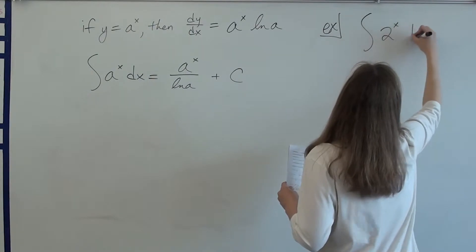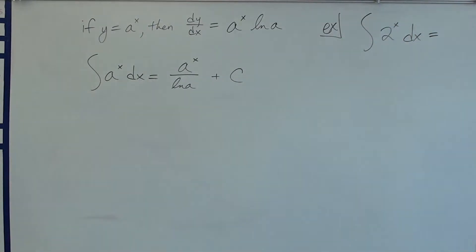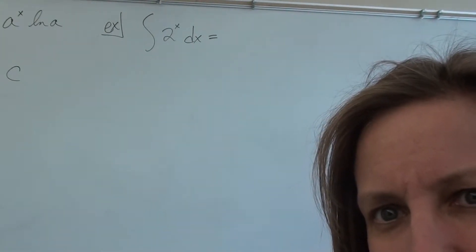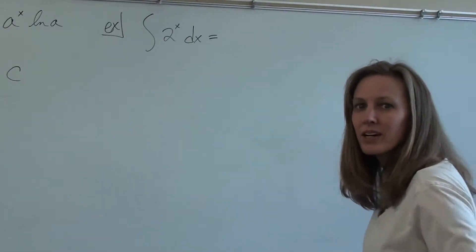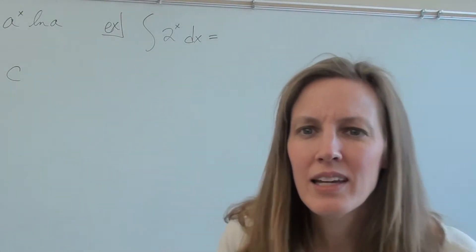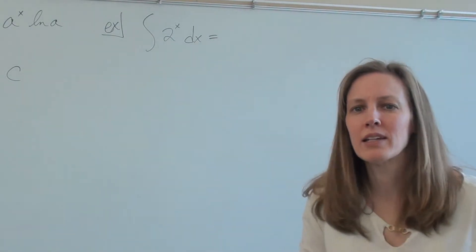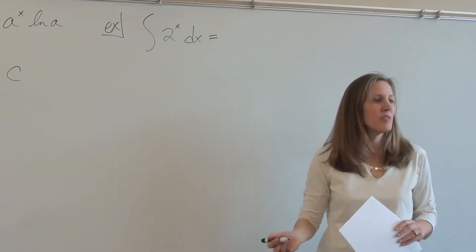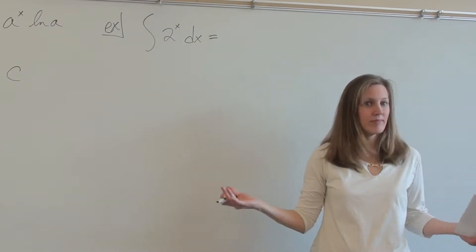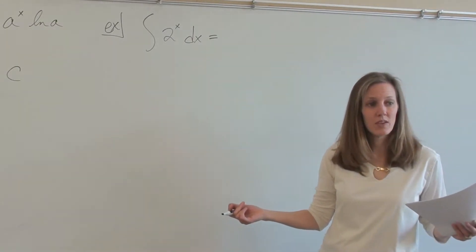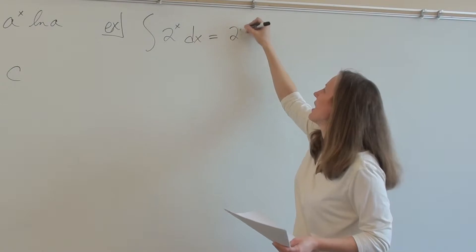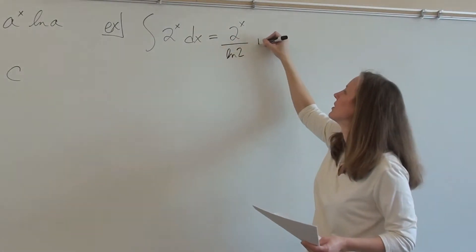Alright, let's start with a very simple one. So let's just see if we can find the integral of 2 to the x. Having trouble with the focus. There we go. See, when I stand out of the camera's thing, it goes out of focus. And when I step back in, it goes in focus. Alright, so 2 to the x, what's the anti-derivative of 2 to the x dx? 2 to the x over ln 2. 2 to the x over ln 2 plus C.